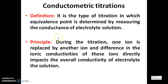What is the principle of this titration? In this titration, one ion is replaced by another ion. The difference in the ionic conductance of these two ions will affect the overall conductance of the electrolyte solution. This is the principle of conductometric titration.